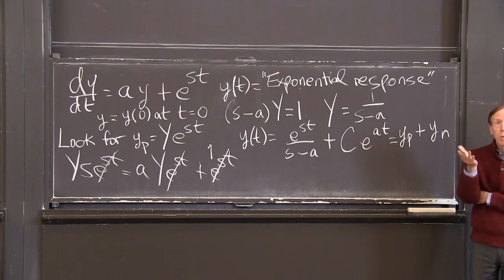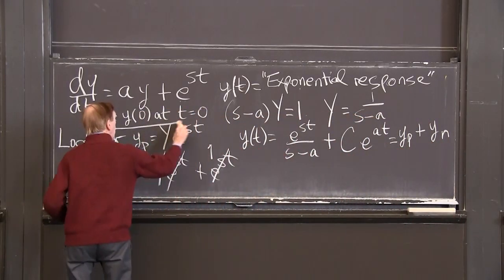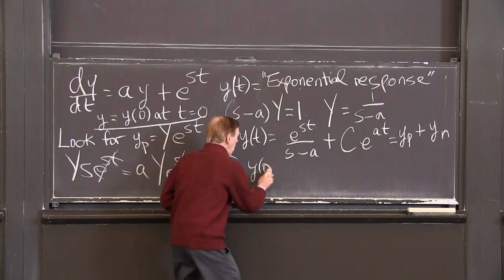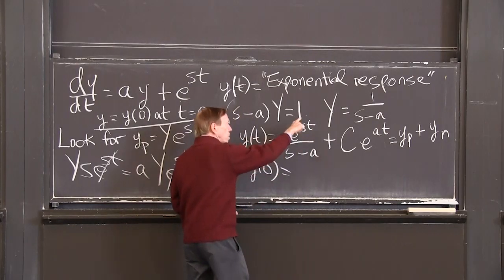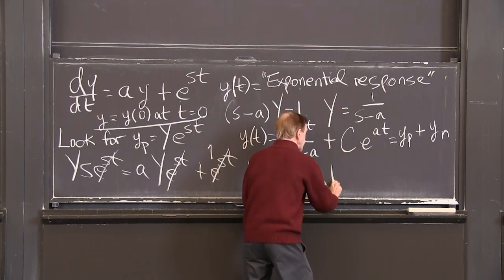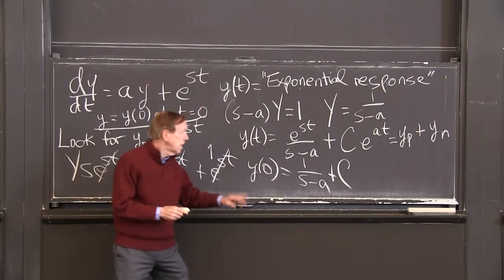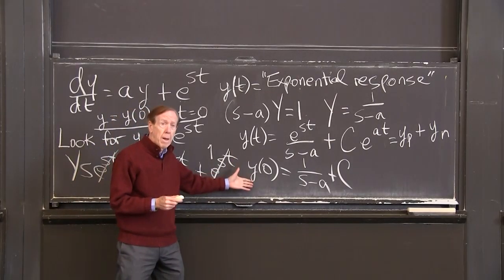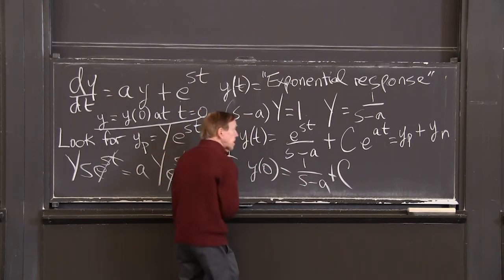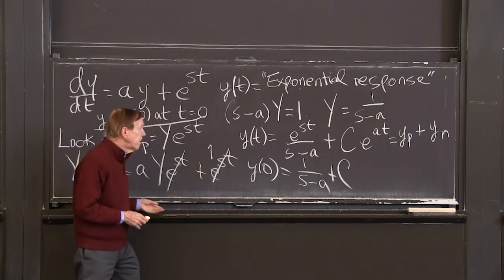The complete solution has that form. And now I can match y = y(0) at t = 0. I put in t = 0. I get y(0) equals... t equals 0, this is 1. So 1 over (s-a), and when t is 0, this is 1, so plus c. So now I know what c is. And notice, c is not just y(0), as we saw sometimes in the past. c is y(0) minus this.